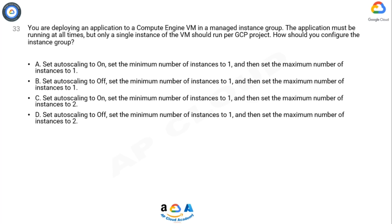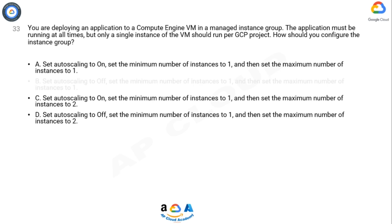Option A is correct. In the GCP console, create a managed instance group for each answer, then for every option delete the instance as a simple test. Option A correctly solves the problem with only a single instance at one time. Option B is incorrect — it does not fit the requirement because after the deletion of the instance, no other instance was created.